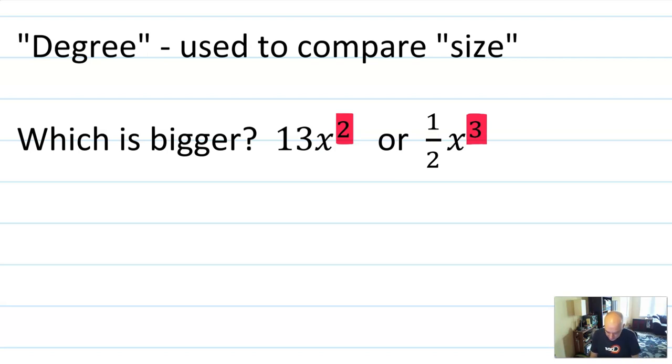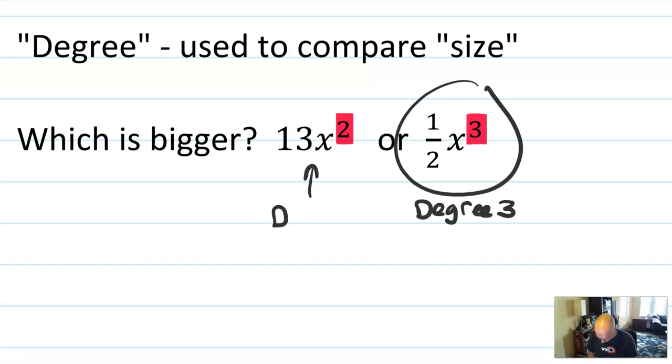So there's this sense that degree or exponent is actually the best way to compare the size of a polynomial. Why do we care about the size of a polynomial or of a term? Well, it helps us construct its graph if we don't know the graph already. So in this case, which is bigger? I would say 1 half x cubed is bigger,